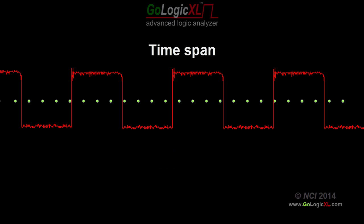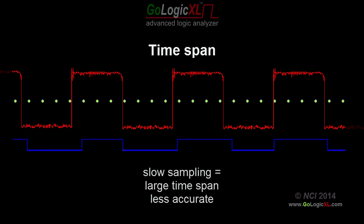In contrast, a slower sampling rate covers a larger span of time, but may cause anomalies to appear in the recreated waveforms.